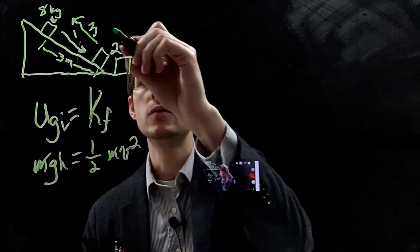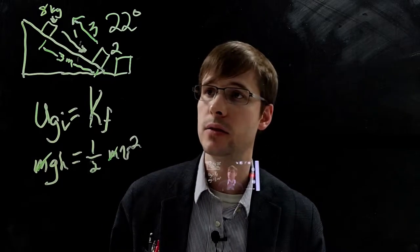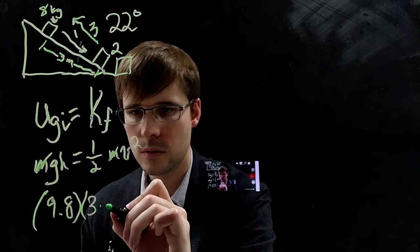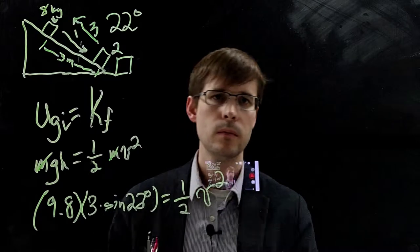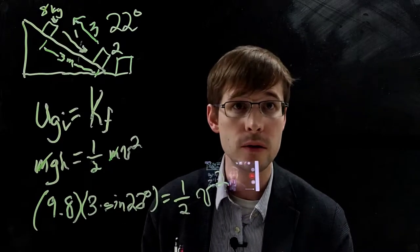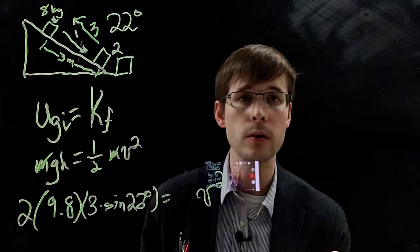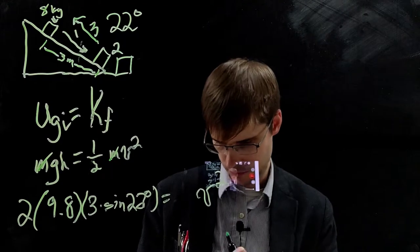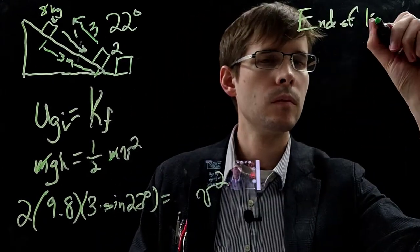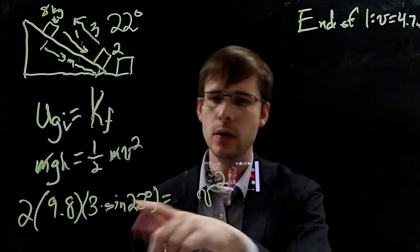And if you remember, this angle here is a 22 degree angle. And so to figure out the height, that would be the y component of this diagonal 3 meter hypotenuse. And so we're going to use SOHCAHTOA. In this case, it's going to be the sine of theta. So we've got 9.8 meters per second per second times 3 meters times sine of 22 degrees. And that's going to be equal to 1 half v. So if we get rid of this 1 half by multiplying by 2 over there and take the square root of both sides, we get at the end of part 1 that our velocity is going to be 4.7 meters per second.